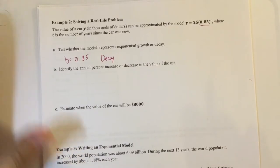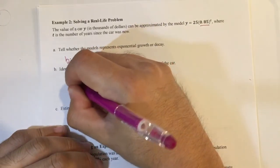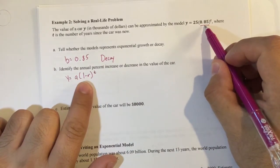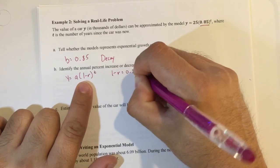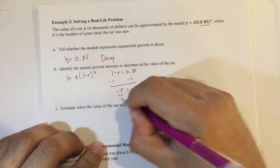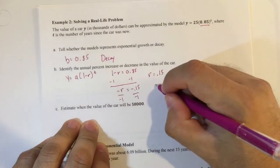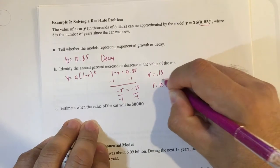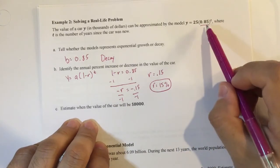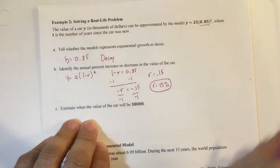Part b says identify the annual percent increase or decrease in the value of the car. So since we figured out that this was decay, then remember we had the y equals a times 1 minus r raised to the t power. Well, I'm going to use this 1 minus r inside because this b value is the same thing as 1 minus r. So I can say 1 minus r equals 0.85, and I can just solve for r. Negative 0.15 divided by negative 1, and we get that r is equal to 0.15. But since this is a percent, we move the decimal 2 to the right, and that becomes 15%. So really, in essence, it's the distance that this number is from 1. So 0.85 is 0.15 from 1, which becomes 15%. Whether it goes up or down, it's going to be a positive number. So that was 15%.